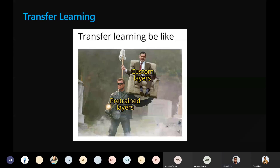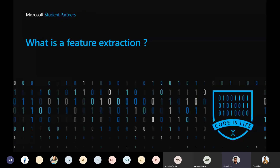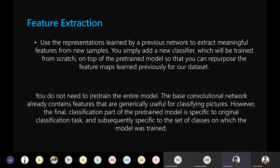Transfer learning can be divided into two basic types: feature extraction and fine tuning. In feature extraction, we simply use the meaningful features extracted from the previous model — we add a new classifier on top of the pre-trained model to repurpose the feature maps learned previously for our dataset. We do not need to retrain the entire model; the basic model stays the same.